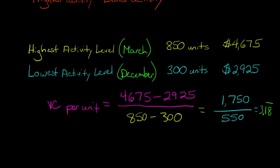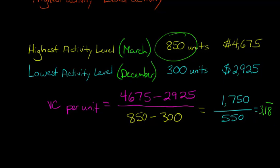So when we want to know the actual total variable cost, for March we would take those 850 units and multiply by $3.18̄.